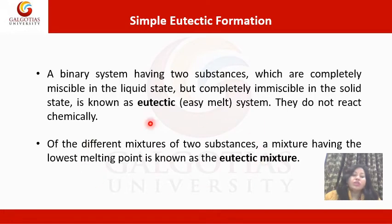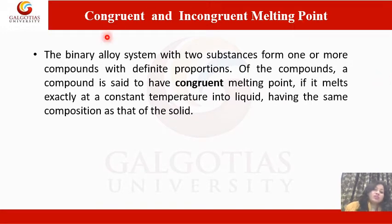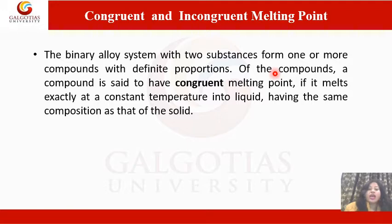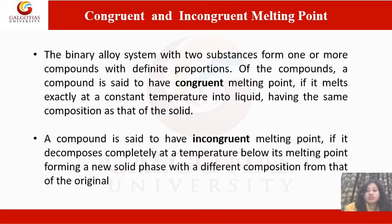Of the different mixtures of two substances, a mixture having the lowest melting point is known as eutectic mixture. The binary alloy system with two substances forms one or more compounds with definite proportions. A compound is said to have congruent melting point if it melts exactly at a constant temperature into liquid having the same composition as that of solid. A compound is said to have incongruent melting point if it decomposes completely at a temperature below its melting point, forming a new solid phase with a different composition from that of the original ones.